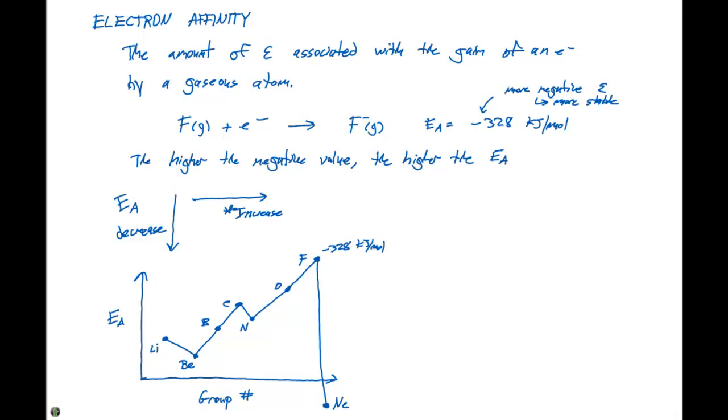For neon, the electron affinity is going to be much greater than zero, because when we give an electron to neon, it does not want it and it's going to become more unstable and not become stabilized.